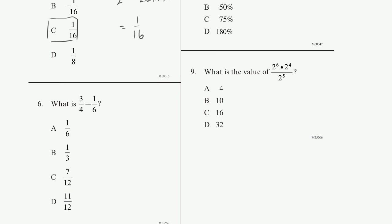Problem 6: what is 3 fourths minus 1 sixth? Whenever you add or subtract fractions, you have to find a common denominator. A good common denominator is the least common multiple of the two denominators — the smallest number that both 4 and 6 go into, which is 12. 4 goes into 12 three times, and 6 goes into 12 two times. So let's rewrite these fractions with 12 as a denominator. 3 fourths becomes 9 twelfths.